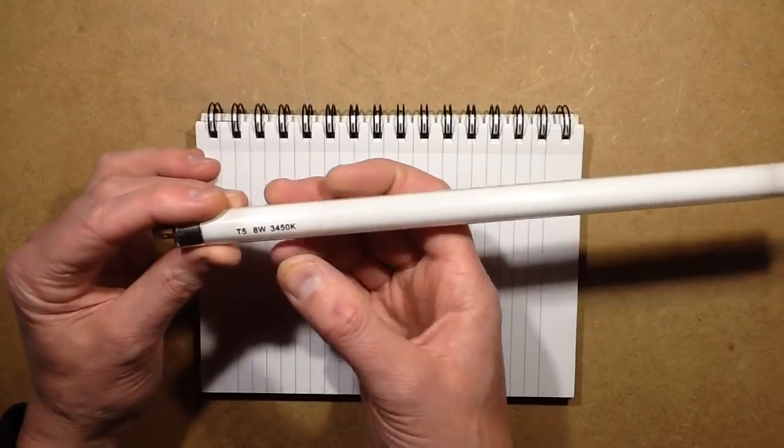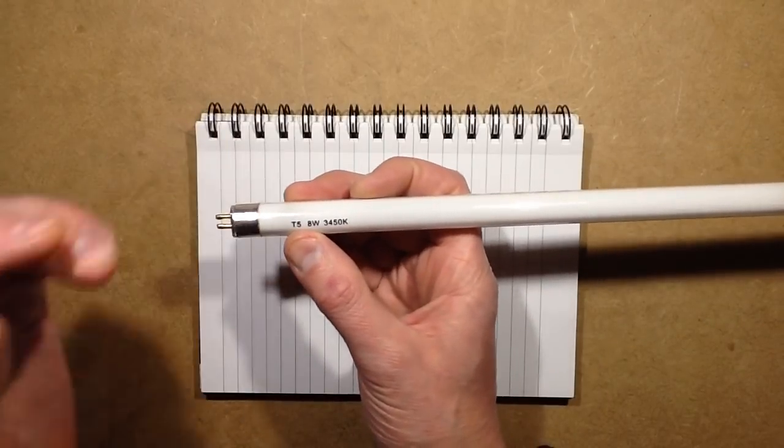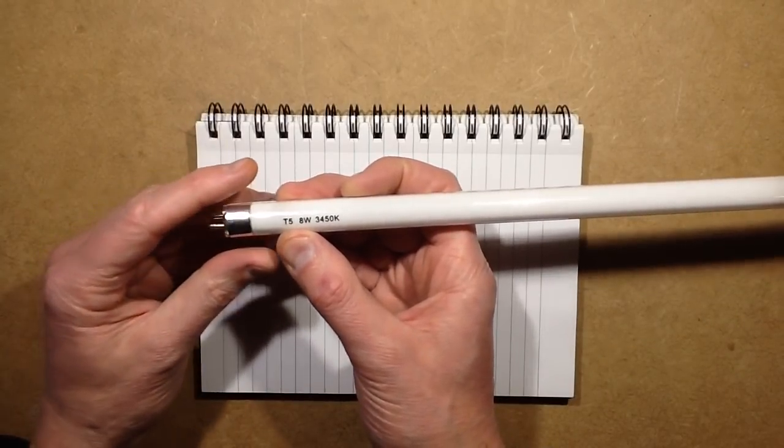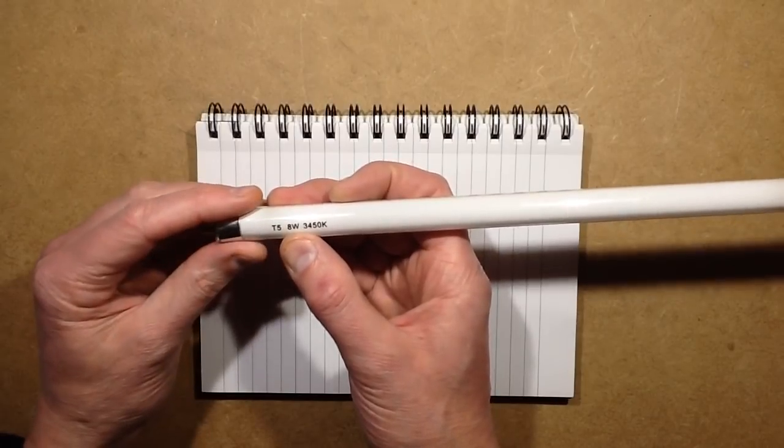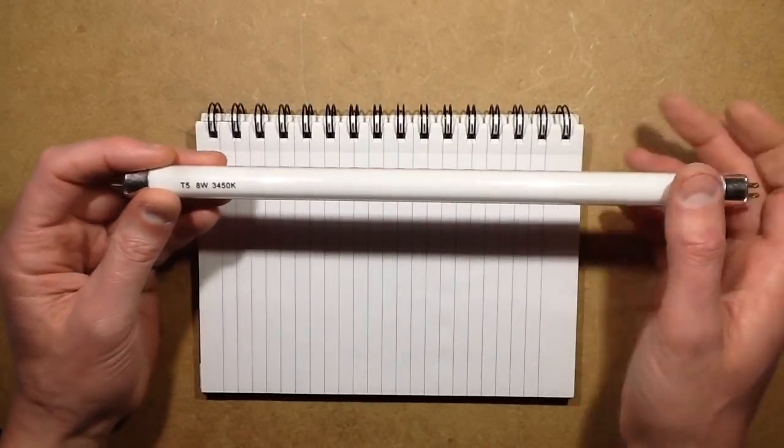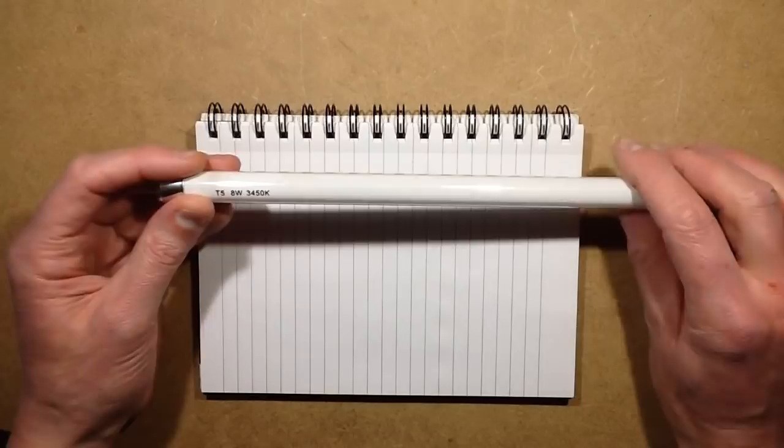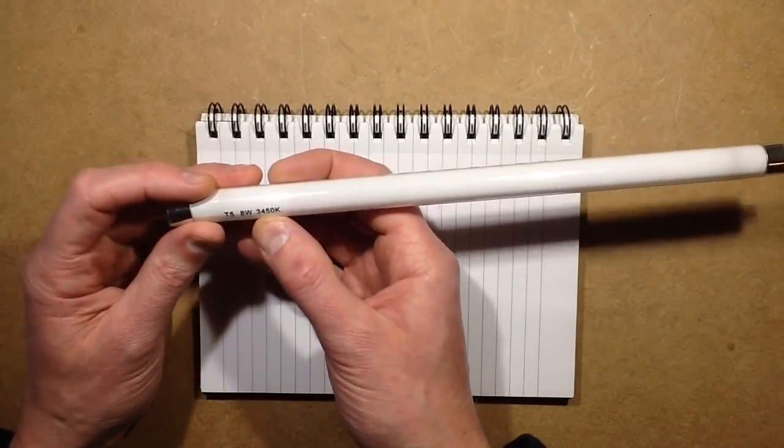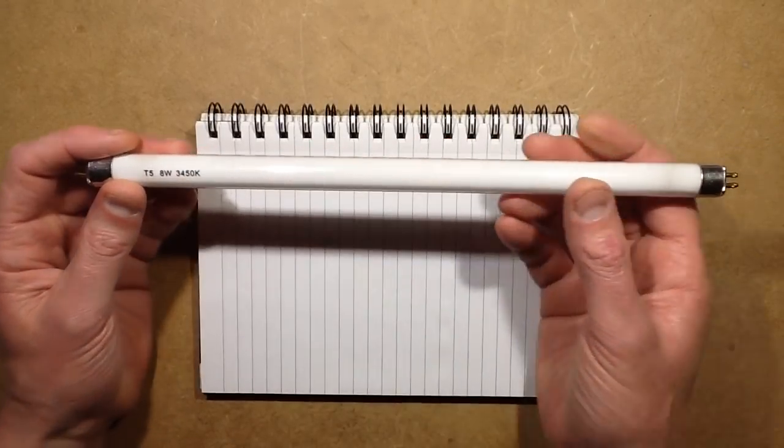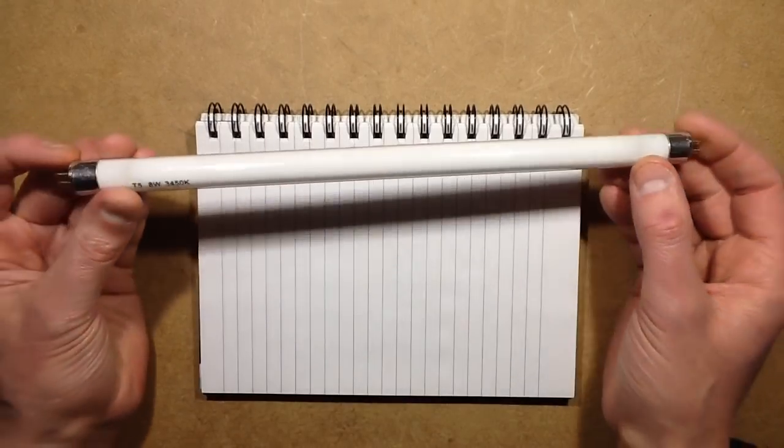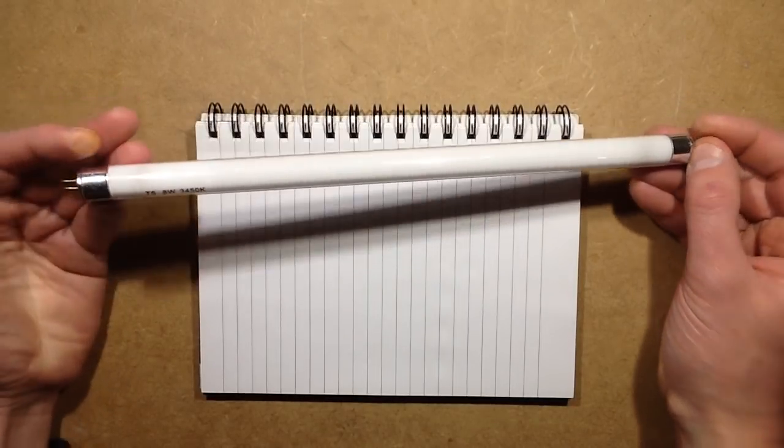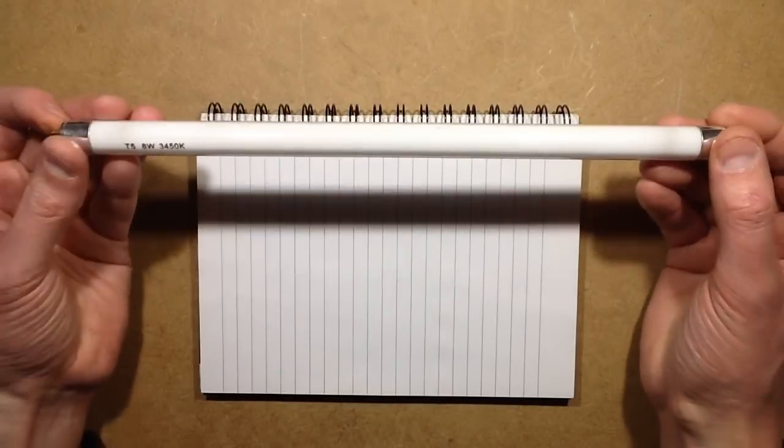So this is a T5 8-watt tube. The T5 is the diameter in eighths of an inch. The 8-watt is its power rating of the tube itself, not the driver and ballast. The 345 is the color temperature, which is fairly warm white. Now you'll notice that this fluorescent tube has two pins at the end. You do get a type of tube called an instant start, which is a single pin. It's actually a cold cathode tube. These are hot cathode tubes, and to explain that, I have to draw it.